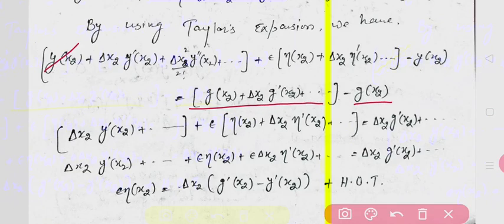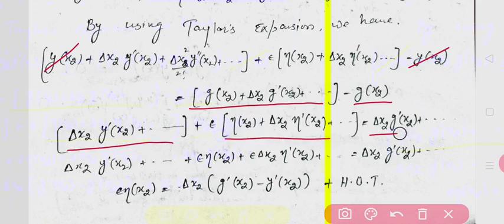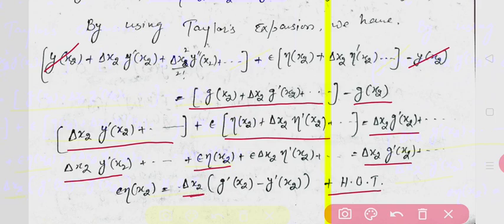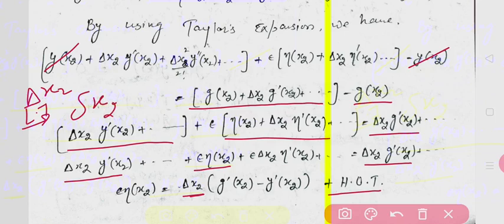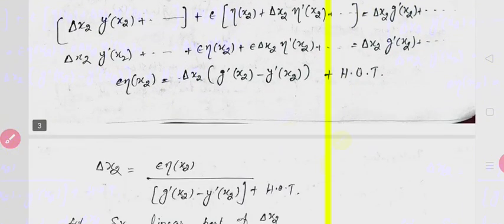After expanding, y(x2) terms cancel. The remaining linear term gives us: delta of x2 (linear part) equals epsilon*eta(x2) divided by (g'(x2) - y'(x2)), by neglecting higher order terms. So the small delta x2, the linear part, equals epsilon*eta(x2) / (g'(x2) - y'(x2)).